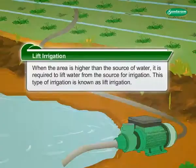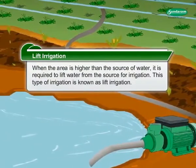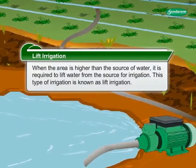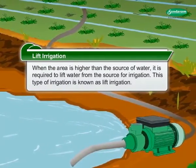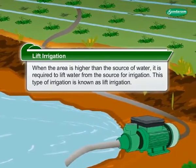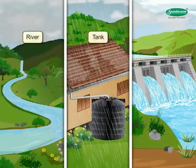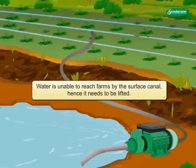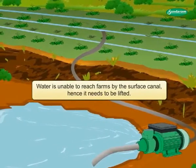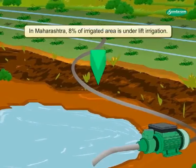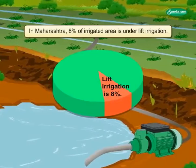Lift irrigation is used when the area is higher than the source of water, requiring water to be lifted from the source. The basic source of water may be a river, tank, or dam. Water is unable to reach farms by the surface canal, hence it needs to be lifted. In Maharashtra, 8% of irrigated area is under lift irrigation.